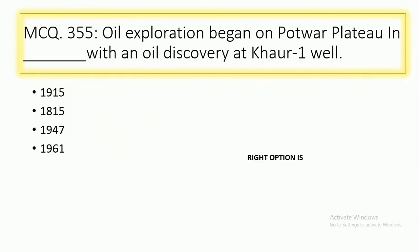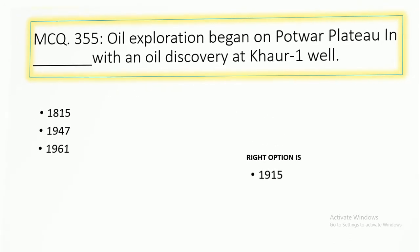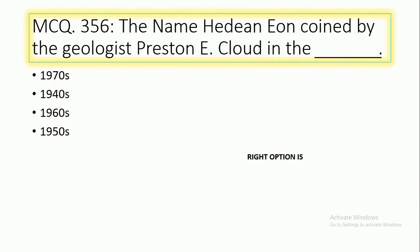MCQ number 354: Animal Exploration — Indies with an island, discovery in C14, 1950s, 1815, 1947, or 1961? MCQ number 355: The name was coined by the geologist President E. Cloud in the 1970s, 1960s, 1940s, or 1950s. The right option is option number 3, 1960s.